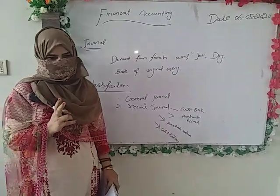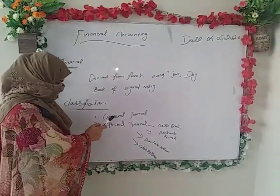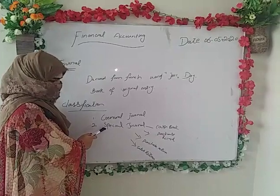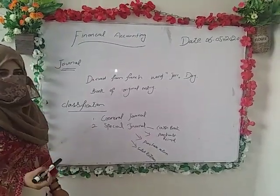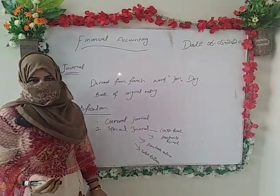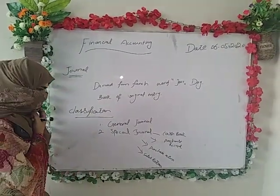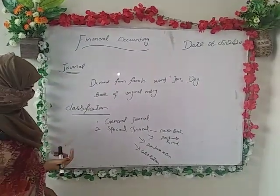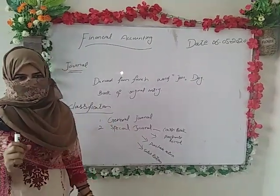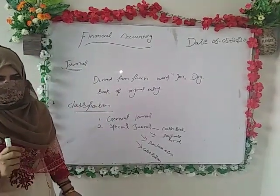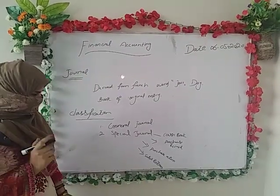Journal ki two types hain. First is general journal, and second is special journal. General journal is the most simplified form of journal which we mainly use in accounting. Journal journal sabse zyada use hota hai, and this is the basic type — the easiest way to understand accounting.